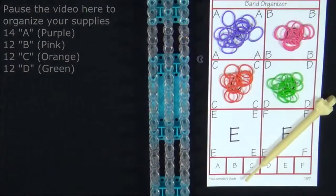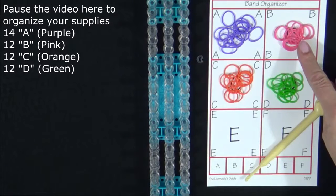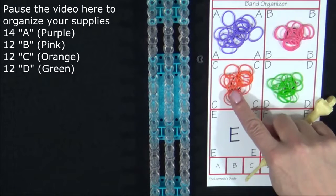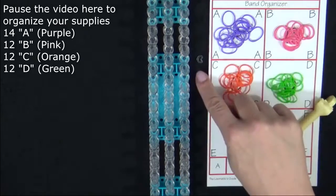To make this bracelet you will need 14 A colored bands, 12 B colored bands, 12 C colored bands, 12 D colored bands, and a C clip.